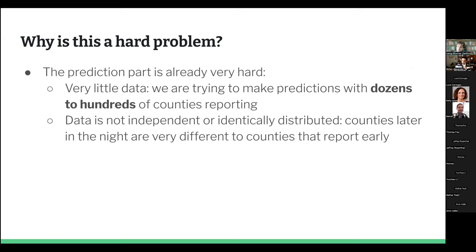A good way of thinking about the non-IID problem: early on in the night, we're getting results from New England — really small, really white places in the US. But at the end of the night, we're getting results from LA County, which is very different from any other place — both in size and demographic makeup. LA County would be the 10th biggest state in the US if it were its own state. It's very different from a random town in Massachusetts. That makes this problem very difficult.